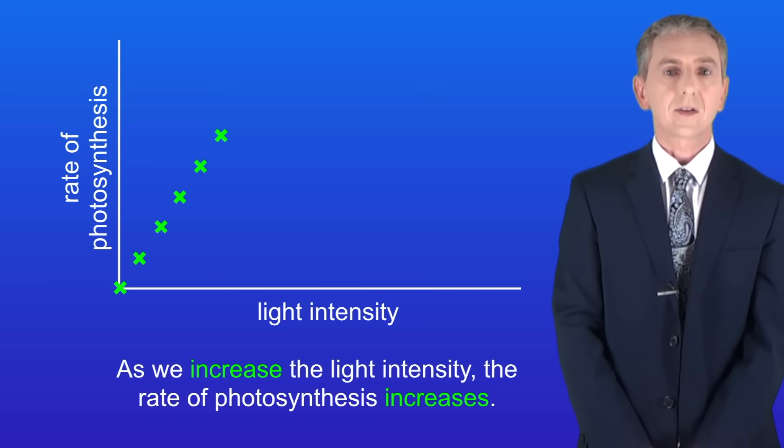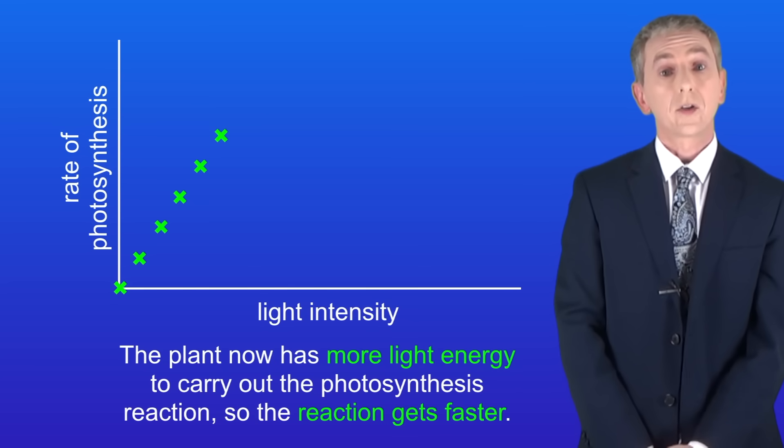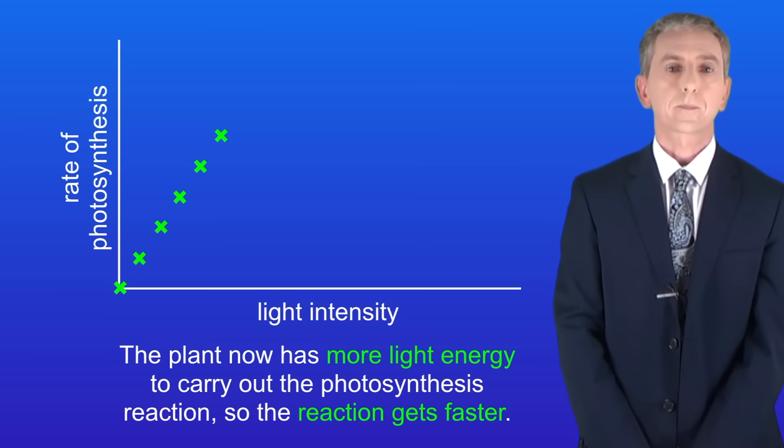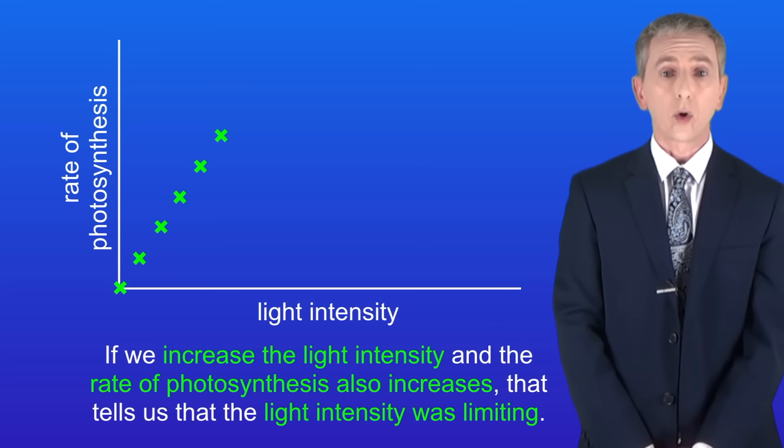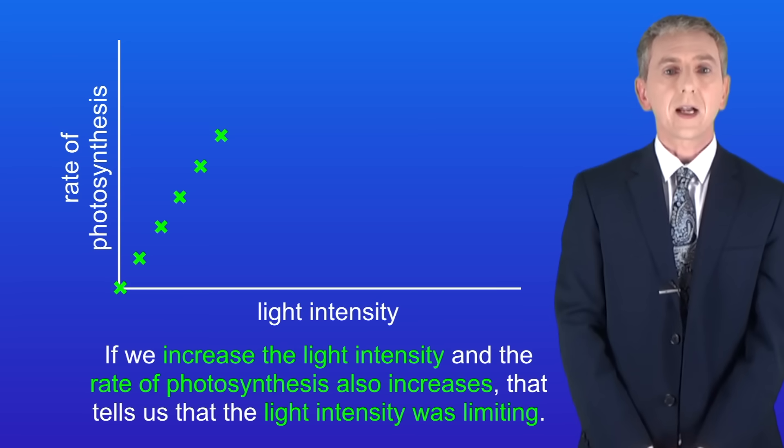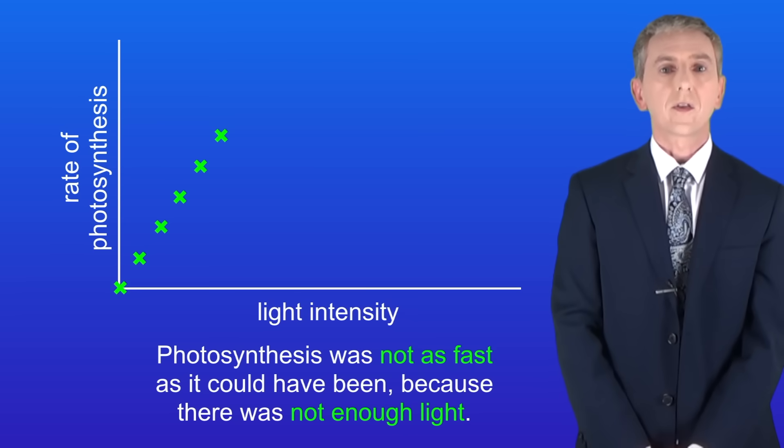As we increase the light intensity, the rate of photosynthesis increases. That's because the plant now has more light energy to carry out the photosynthesis reaction so the reaction gets faster. Now there's a key point here that you need to get. If we increase the light intensity and the rate of photosynthesis also increases, that tells us that the light intensity was limiting. In other words, photosynthesis was not as fast as it could have been because there wasn't enough light.